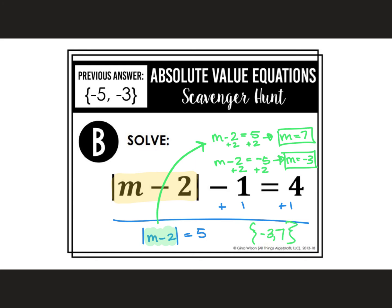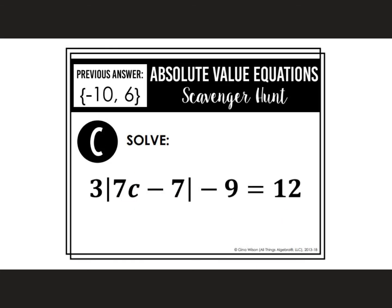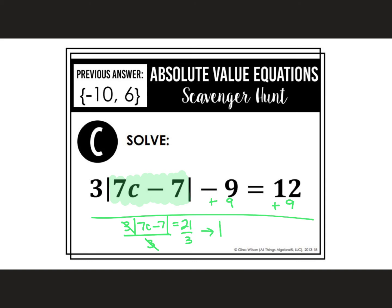The next one is C, which has a little bit more going on. I need to get rid of anything that's not inside the absolute value before I break it up into its two parts. So here we're going to add 9 first. That gives me 3 times the absolute value of 7C minus 7 equals 21, and then I'll divide by 3. The trap here is that you might want to distribute, but remember you can't distribute into an absolute value.